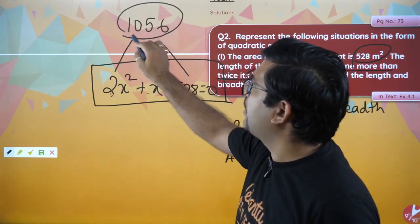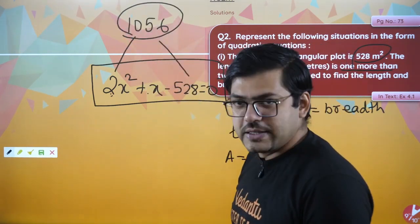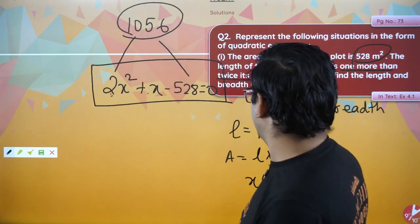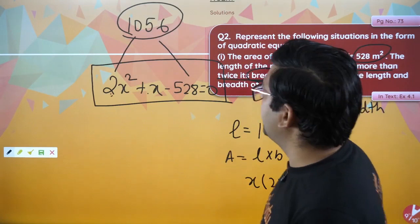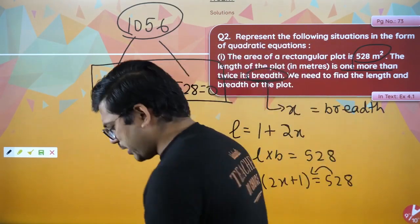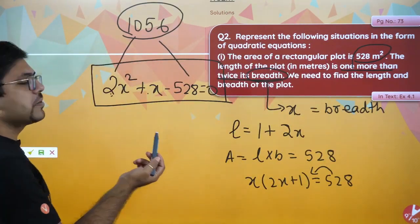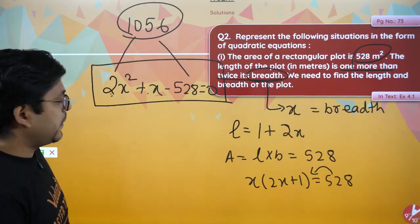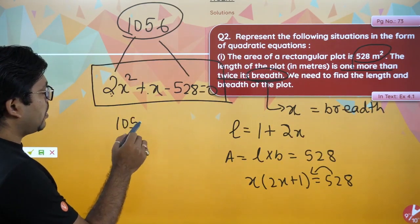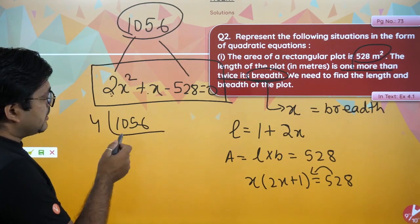So I will do middle term splitting. We have 1056, and we break it as 33 and 32. These multiply to 1056 and their difference is 1, which is what we need.